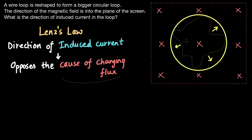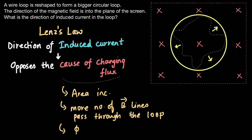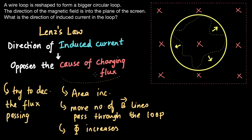We begin by thinking about the cause of changing flux. The area of the loop is being increased, so more magnetic field lines now pass through the loop, leading to an increase in the magnetic flux. To oppose this increase and minimize this change, the coil should try to decrease the flux passing through it. To do this, there must be magnetic field lines coming out of this circular loop — outside the plane of the screen.